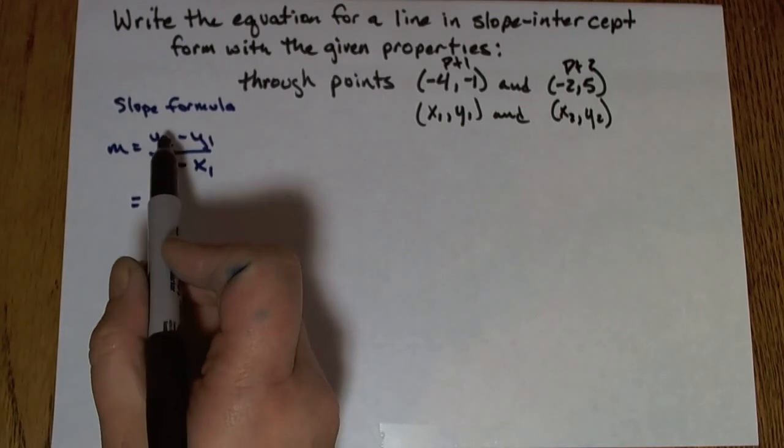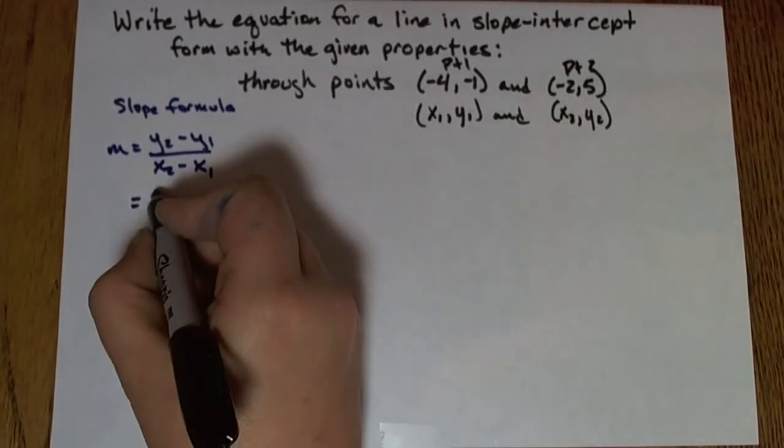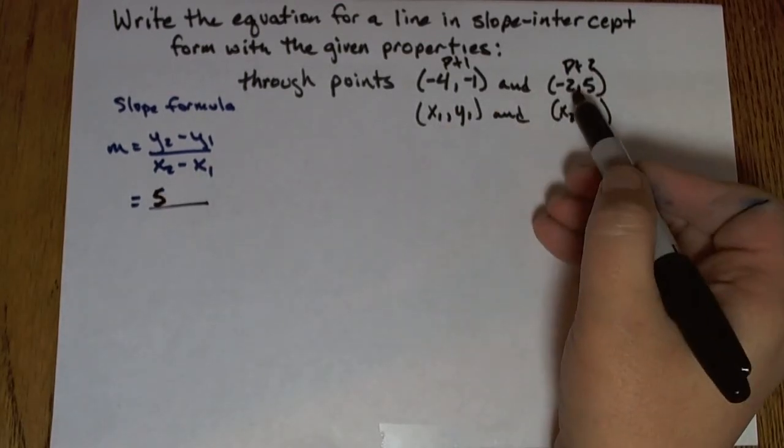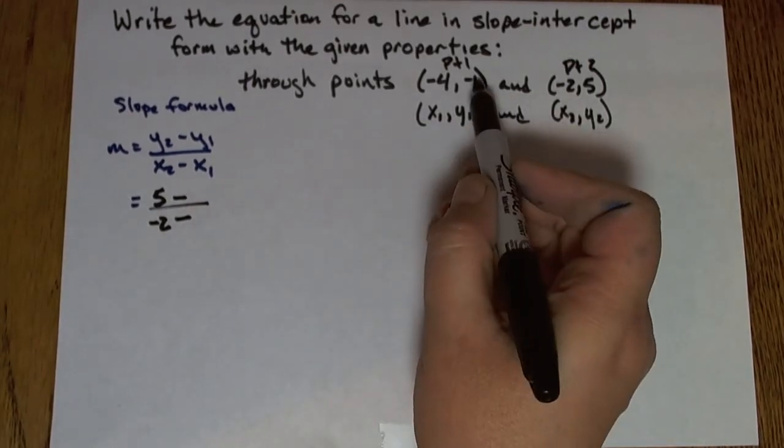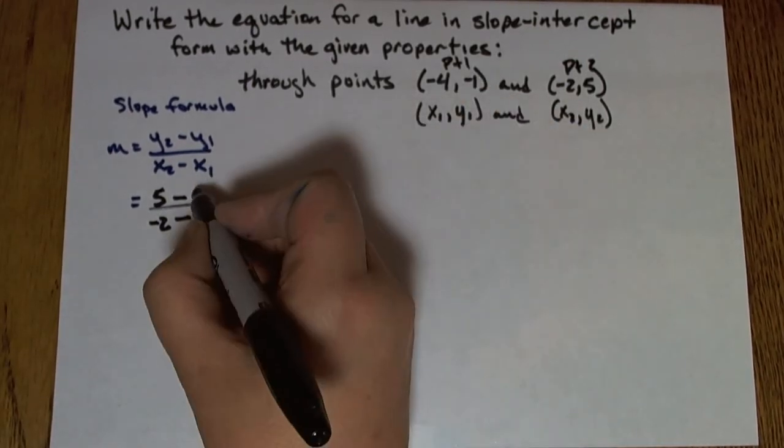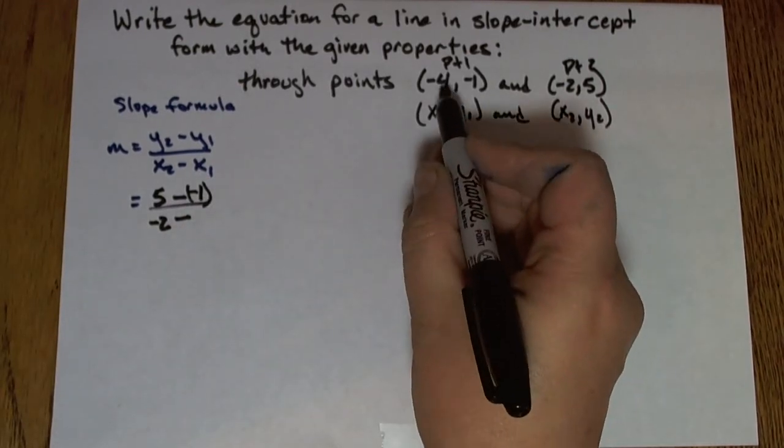So now substitute the values into my slope formula. First we'll have the x2 and y2 values. So y2 is 5, y's going to go on the top, and x2 is negative 2. And I'm subtracting and I'll go to my other point. y1 is negative 1. Again, the y values go on top, and x1 is negative 4.